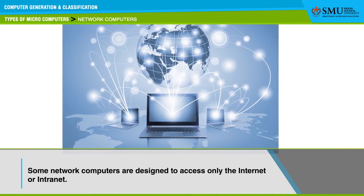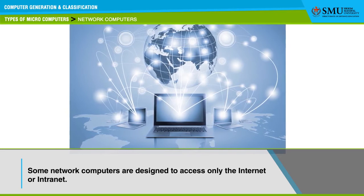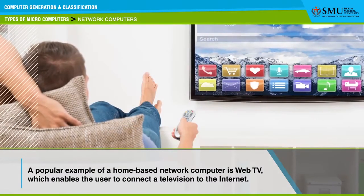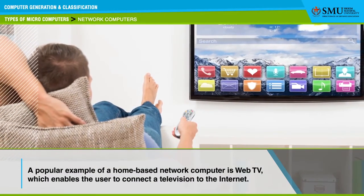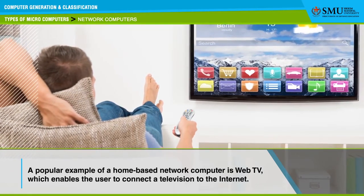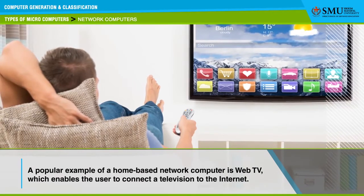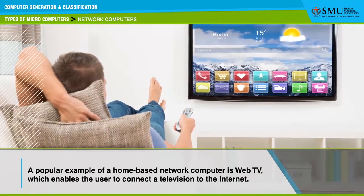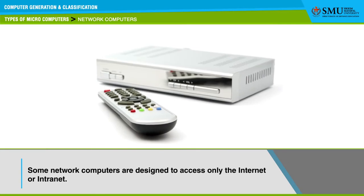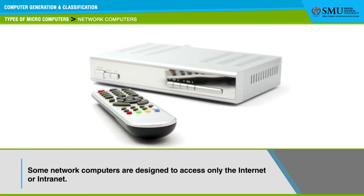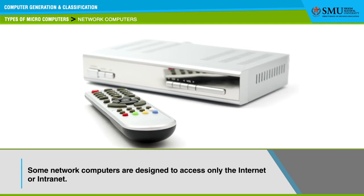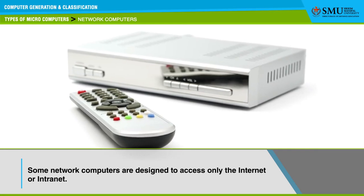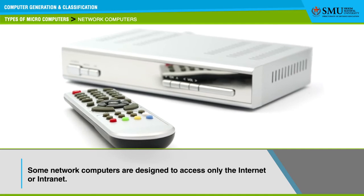Some network computers are designed to access only the internet or intranet. These devices are sometimes called internet PCs or internet boxes. In some homes, network computers do not have a monitor and are connected to home television, which serves as the output device. A popular example of a home-based network is Web TV, which enables the user to connect a television to the internet. The Web TV has a special set-top box used to connect to the internet, and provides simple controls which enable the user to navigate the internet, send and receive emails, and perform other tasks on the network while watching television.